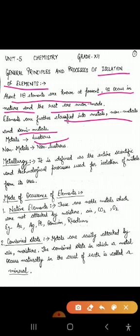Non-metals are non-lustrous — they are not shiny. In the earth's crust, metals are found in the combined state, like in the form of sulfides, oxides, carbonates, sulfates, and nitrates. Metals are reactive because they have low ionization enthalpies, which you covered in 11th grade.